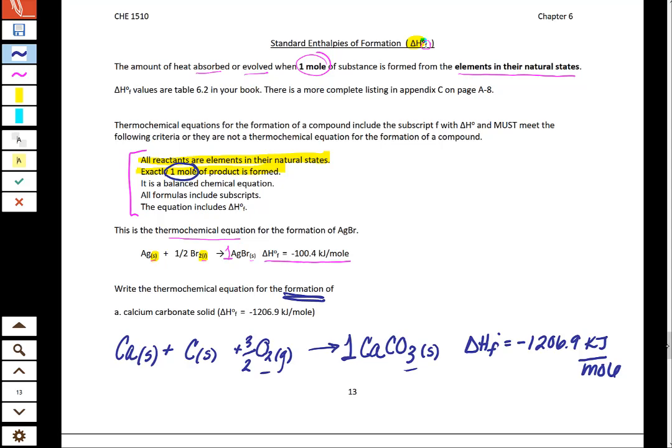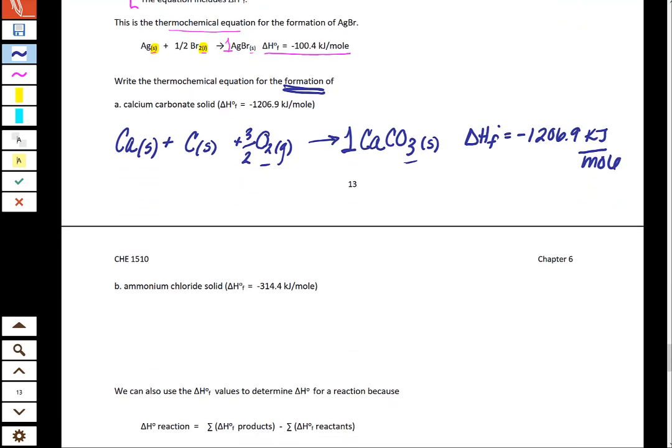If you want to do one more, as practice, there's one here for aluminum chloride. Otherwise, what we can do is go on to kind of another version of Hess's law.